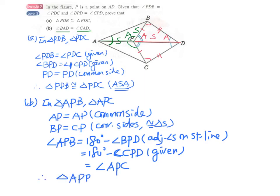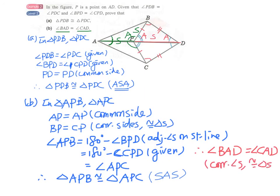triangle APB is congruent to triangle APC. And the reason is SAS. We just follow the letters. If I can write, SAS. And finally, don't forget to write down the answer. This is what the question asks. Angle BAD equals to angle CAD. And this is corresponding angles, congruent triangles. Thank you very much.